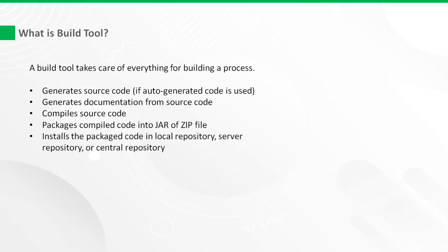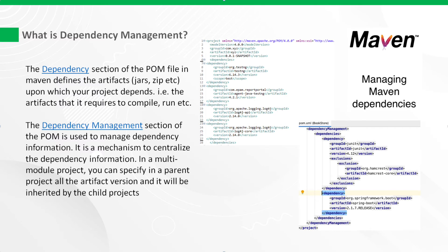What is a build tool? A build tool takes care of everything for building a process. It can generate source code, generate documentation from source code, compile source code, package compiled code into a JAR or ZIP file, and install the packaged code in a local, server, or central repository.